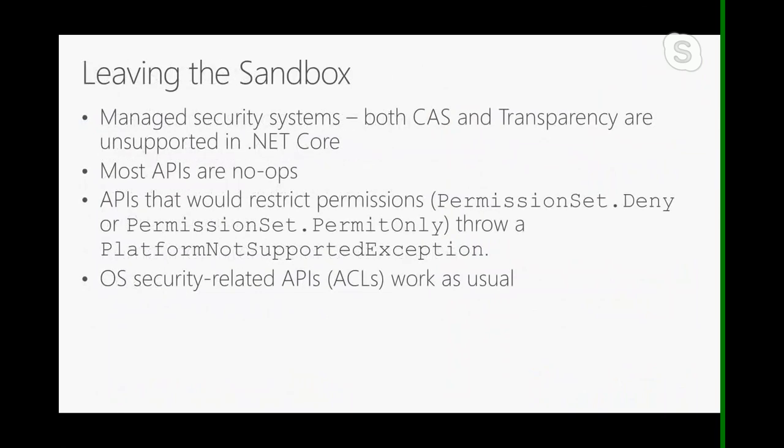Jumping in, I'm going to start with security, because this one's actually really simple. It's simple because the story is there is no managed security on .NET Core. We have the APIs for code access security. We have the APIs for transparency, so all of your existing attributes and calls to these systems will continue to compile and work. But the thing you need to know is that there are no-ops now.